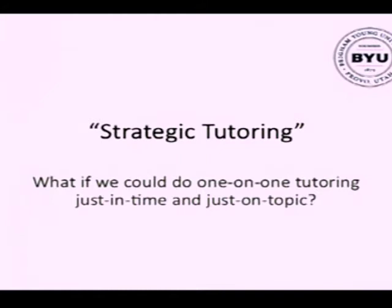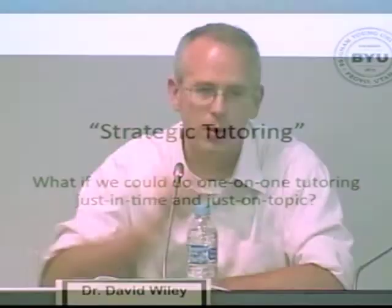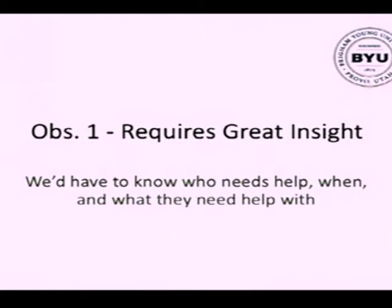Because when I'm tutoring you one-on-one, chances are 80% of what I'm teaching you, you would have understood just from reading the book. A tutor is only acting as a tutor when they're actually tutoring. This idea of doing strategic tutoring — if you think about it, it requires at least three things. One: it requires you to have a very, very deep amount of insight and understanding of who needs help, when do they need help, what do they need help about. That's a lot of information that generally we don't have. Data are the key to having that kind of insight.